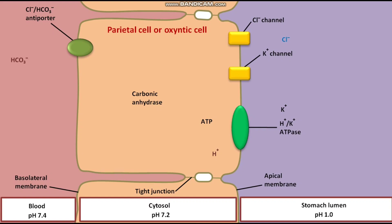Numerous mitochondria in the oxyntic cell produce abundant ATP for use by the H+/K+ ATPase. The cytosolic ATP in the presence of H+/K+ ATPase forms ADP and Pi. By using this ATP hydrolysis, the H+/K+ ATPase pumps the luminal K+ ion into the cytosol and pumps the cytosolic H+ ion into the stomach lumen, regulating the exchange of cytoplasmic H+ ion for extracellular K+ ion.